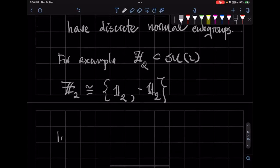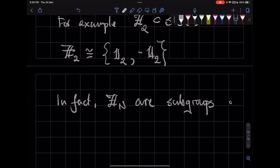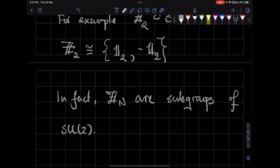Right? So in fact, SU(2) has an infinite number of discrete normal subgroups because all the Zn groups are subgroups of SU(2), right?